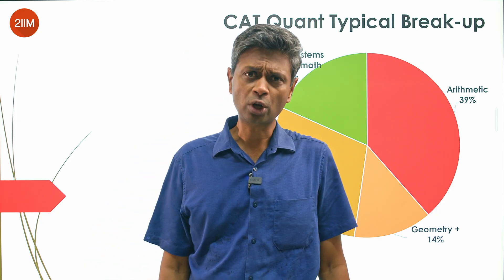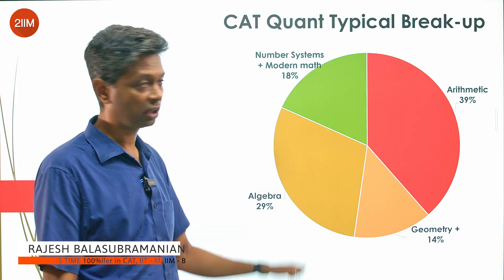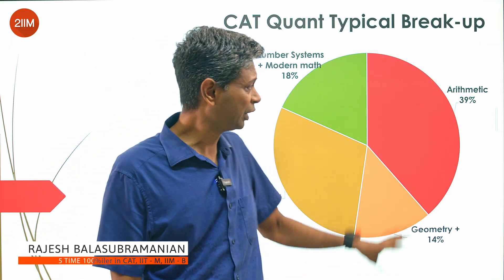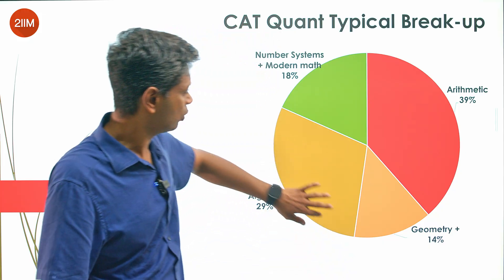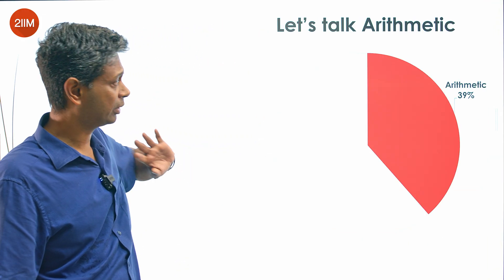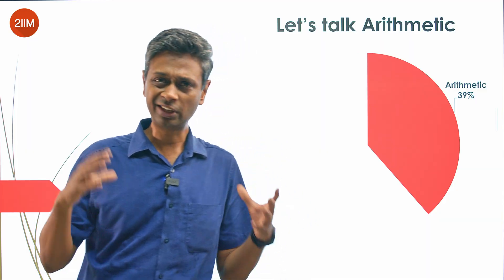Hello folks, we spoke about how quantum sits inside arithmetic, geometry, algebra, and number systems. We then said arithmetic is the giant in the room, the elephant in the room, and it's nearly 40 percent. We're going to dive down deeper into arithmetic and what this 40 percent means.